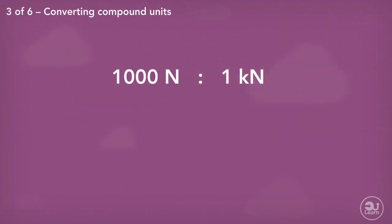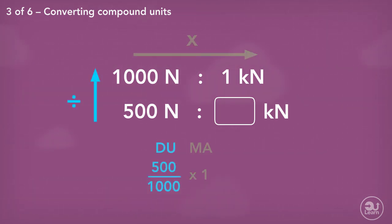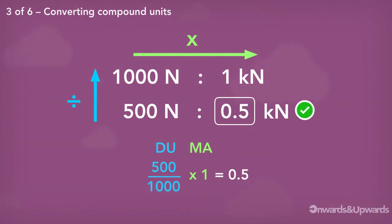Next, we convert the individual units. There are 1,000 newtons that make up 1 kilonewton. So to change 500 newtons to kilonewtons, we use our Duma method once again, divide up, multiply across. 500 divided by 1,000, multiplied by 1, gives us 0.5 kilonewtons.